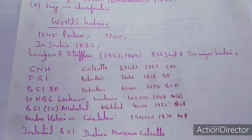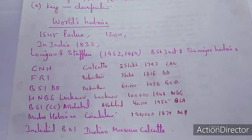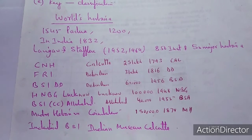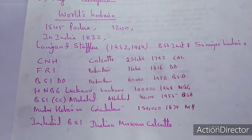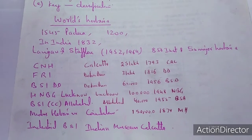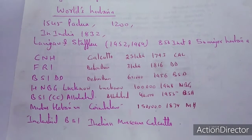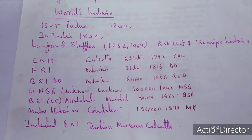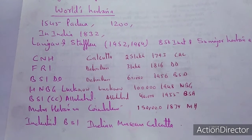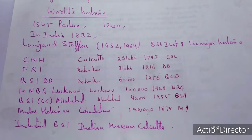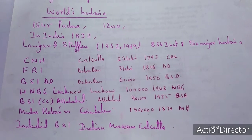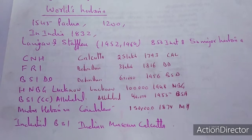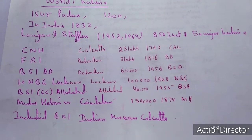There are a number of herbariums in the world. As mentioned, in 1545 the University of Padua was the first university to start herbarium practices. Nearly 1200 herbariums have been recognized at present. In India, this process has also been there. Langeau and Staphylo in 1952 and 1964 suggested that 850 institutions have herbarium all over the world, and 50 major herbariums were recognized.